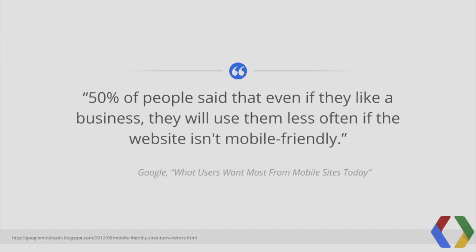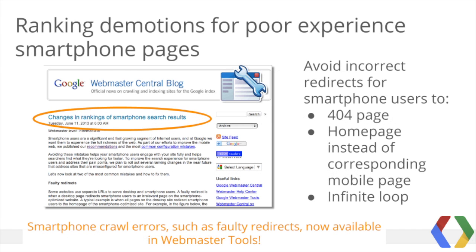In this video, we'll focus entirely on the mobile web and how to improve high traffic, poor user experience mobile pages. The Google Mobile Ads blog cites that 50% of people said that even if they like a business, they'll use them less often if the website isn't mobile friendly. My colleagues Pierre Farr and Yoshiki Okato provided advance notice about smartphone ranking demotions for web pages that offer a poor searcher experience. Commonly, those poor experiences are caused by undesirable redirects to a 404 page, the home page instead of a corresponding mobile page, or an infinite loop.